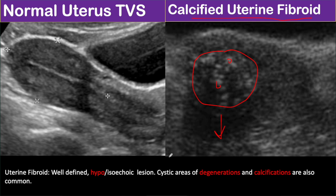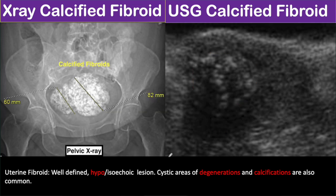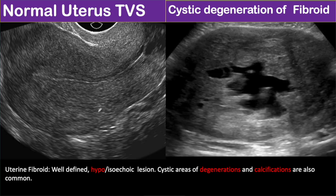Calcified fibroid can be better seen on X-ray. In this image you can see a large heterogeneous solid and cystic mass almost completely filling the uterus, in the background of long-standing uterine fibroid. These features are suggestive of cystic degeneration of uterine fibroid.